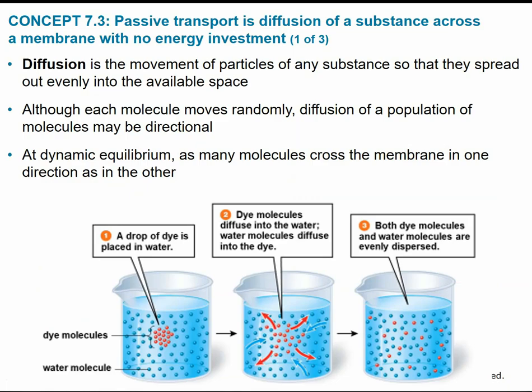Passive transport involves movement of substances across the membrane with no energy — it's a passive, hands-off process that happens naturally via diffusion. Diffusion is the movement of particles of a substance spreading out evenly in the available space, going from a region of high concentration to low concentration. Most things in nature want to be at equilibrium and balanced, so diffusion is how molecules try to obtain that equilibrium.